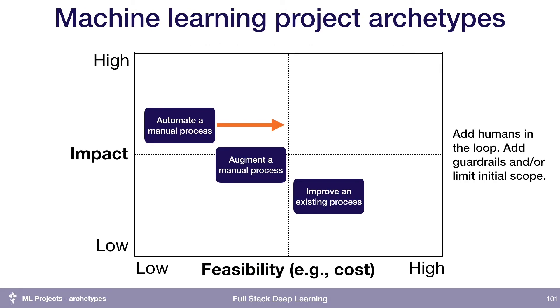For projects automating a manual process, you can make this easier by adding humans in the loop or limiting the scope of the project and adding guardrails. Most self-driving car companies are taking one of those two strategies: either they have human drivers providing feedback to intermediate versions of the system, or guardrails where they only operate within a certain area. Those are the ways to make these projects more feasible.